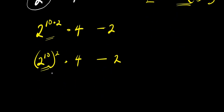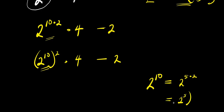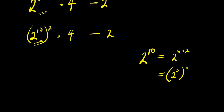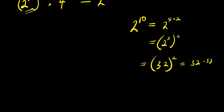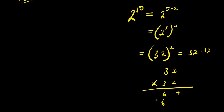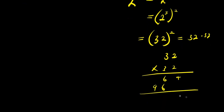Let's go ahead and find the value of 2 to the power of 10. This equals 2 to the power of 5 times 2, and I can express it as 2 to the power of 5, raised to the power of 2. So 2 to the power of 5 is 32, so this is 32 to the power of 2, which means 32 times 32. Multiplying: 2 times 2 is 4, 2 times 3 is 6, 3 times 2 is 6, 3 times 3 is 9 — adding up gives us 1024.